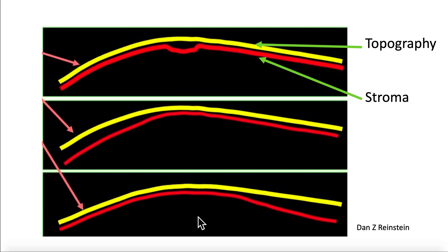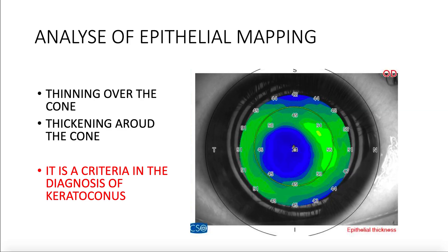In these three different shapes of the stroma, you will have only one shape of the epithelial anterior surface that gives us the topography. We will see that topography is really misleading. The analysis of epithelium mapping will show a thinning over the cone and a thickening around the cone, and this image is a criterion in the diagnosis of keratoconus.